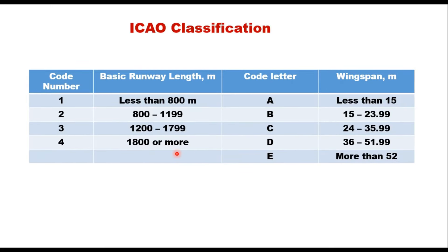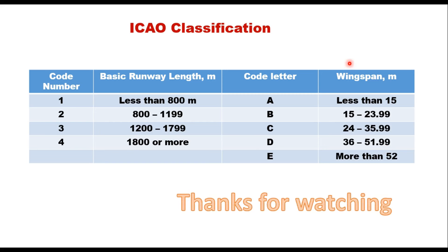ICAO has also given a classification using an aerodrome reference code system. It has two elements: code numbers 1 to 4 classify the length of runway available, and code letters A through E are based on aircraft wingspan. When the basic runway length is less than 800 meters, it is code number 1; when it is 1800 meters or more, it is code number 4. For larger aircraft, code letter E applies. For example, an aerodrome reference code of 4D means the basic runway length is 1800 meters or more, serving aircraft with a wingspan greater than 36 meters but less than 52 meters.